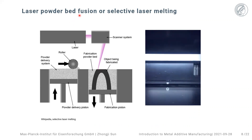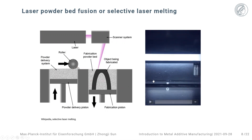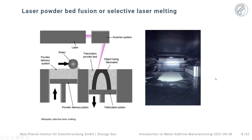Powder Bed Fusion is divided into two groups. One is called Laser Powder Bed Fusion or Selective Laser Melting — the energy source is laser. Looking at the schematics, there are two chambers: one containing raw powder material, and one where fabrication takes place. For each layer, the powder delivery piston moves up, the roller brings powder to the fabrication piston, then the laser moves according to the computer-designed CAD data.